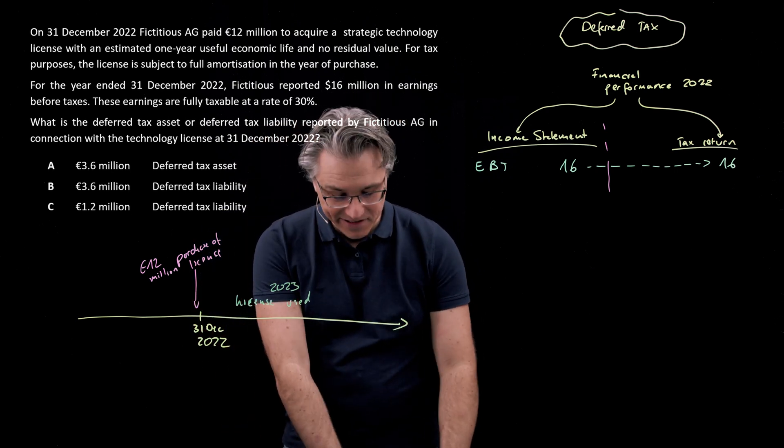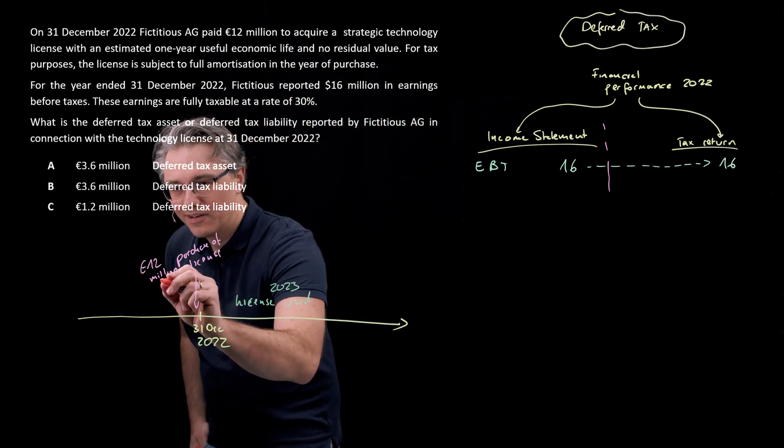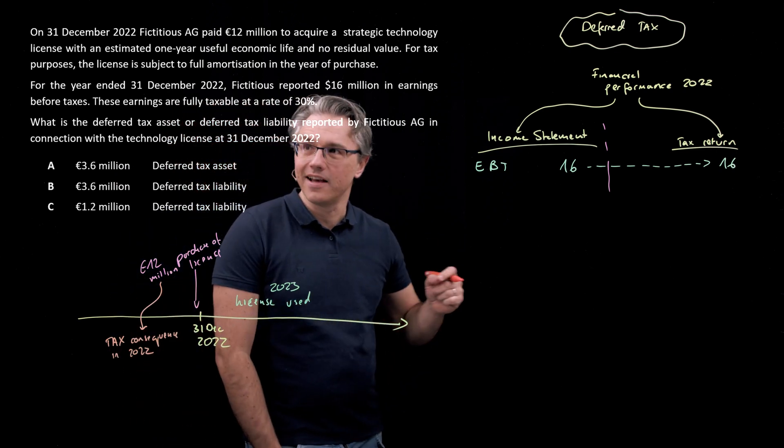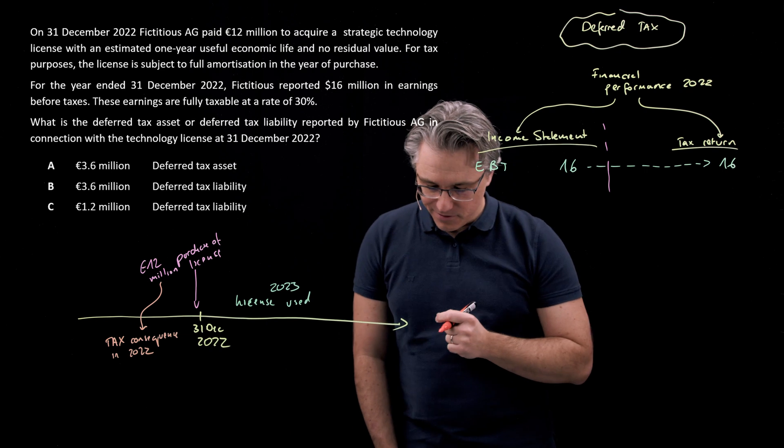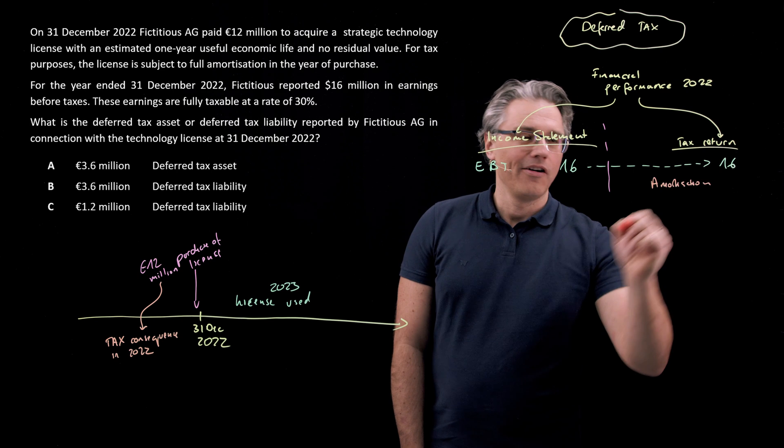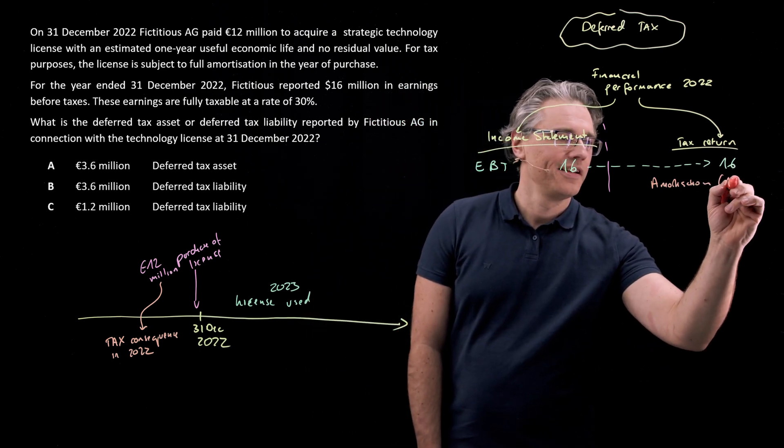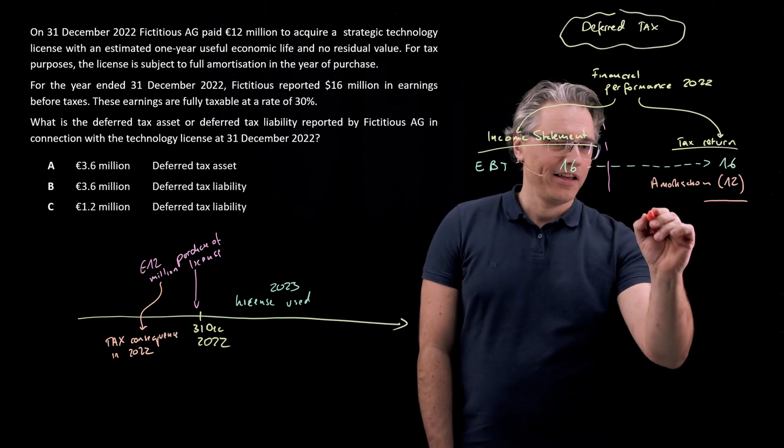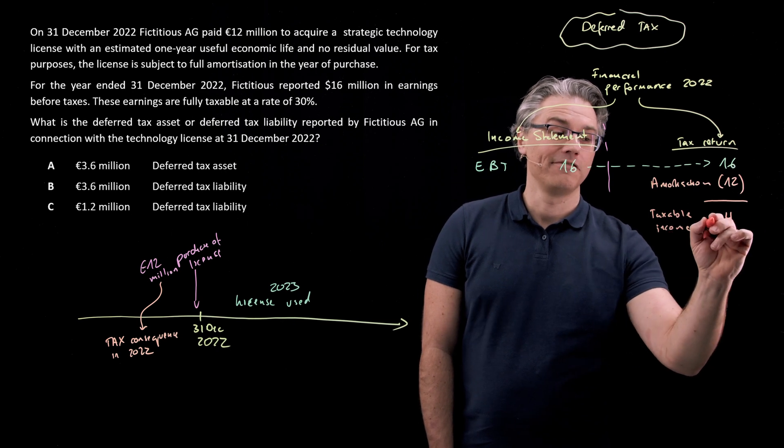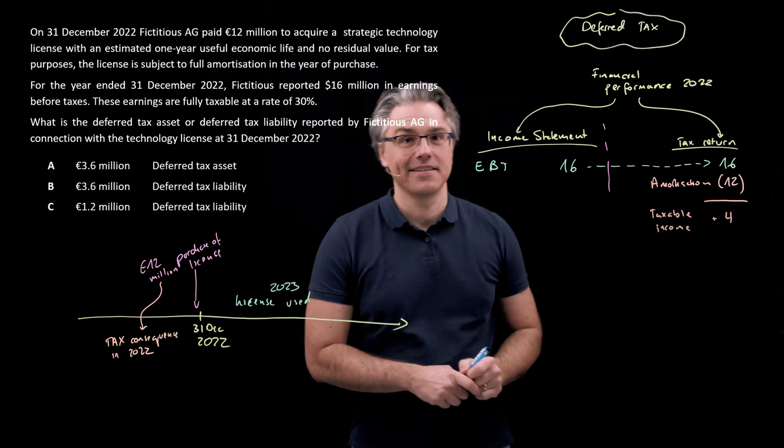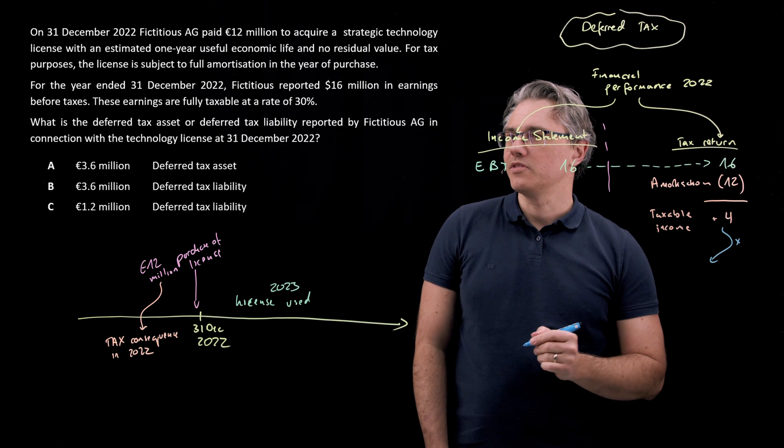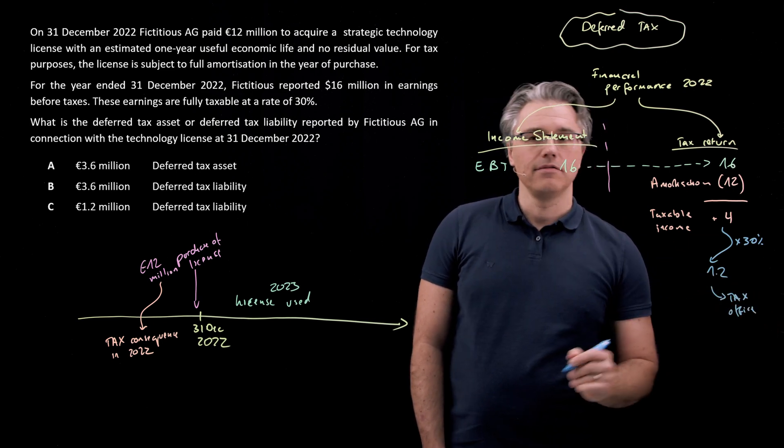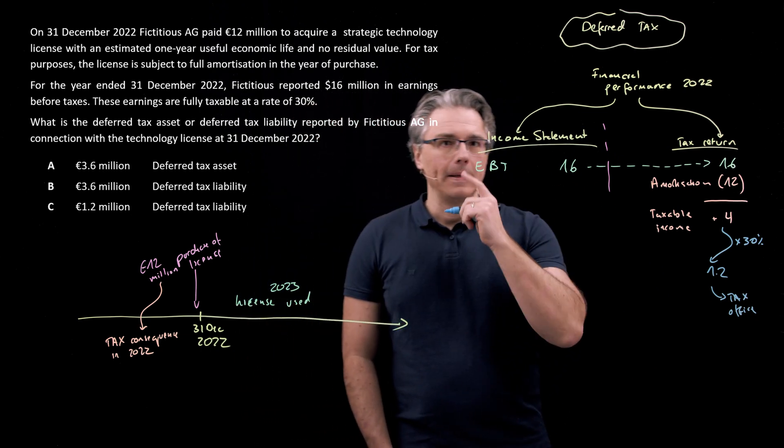However, from a tax perspective, it creates an immediate benefit. It has an immediate tax consequence because in 2022 we are told it's eligible for full amortization in the year of purchase. So under the tax return, amortization of 12 million, the full value of the license, hits our tax return. It's a positive thing because that allows us to have lower taxable income equal to four, and that is the basis for the computation of any tax which needs to be paid. So times the tax rate, thirty percent, four times thirty percent is 1.2. That's how much we pay to the tax office.